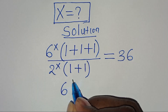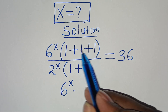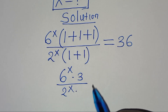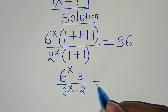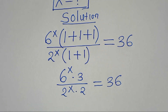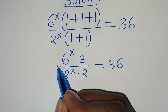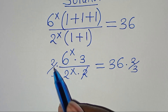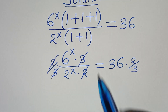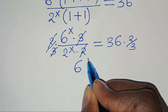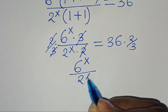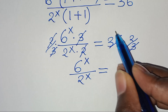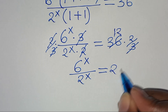So we have 6 to the power of x multiplied by 3 (since 1 plus 1 plus 1 is 3), divided by 2 to the power of x multiplied by 2 (since 1 plus 1 is 2), and this equals 36. Multiplying both sides by 2 over 3, the 2s and 3s simplify, so we get 6 to the power of x divided by 2 to the power of x, which equals 36 divided by 3 equals 12, and 12 times 2 equals 24.